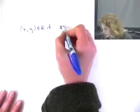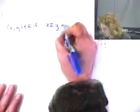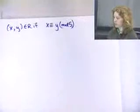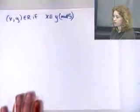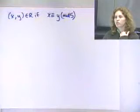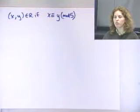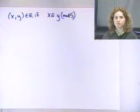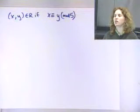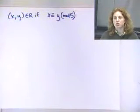Let's do this one. x, y is in R if x is congruent to y mod 5. If you don't know what this is, that's fine. Congruent to y mod 5 means you have the same remainder — x and y have the same remainder if you divide by 5. That's just a mathematical way of saying if you divide by 5, they both have the same remainder.